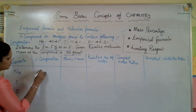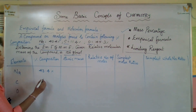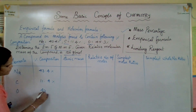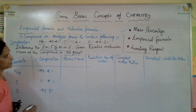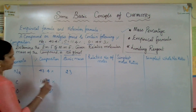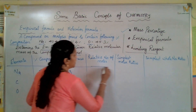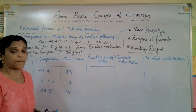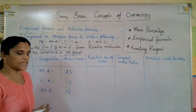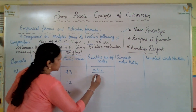Now find the simplest molar ratio by dividing each by the smallest value (0.95). Sodium: 1.89/0.95 ≈ 2; carbon: 0.95/0.95 = 1; oxygen: 2.83/0.95 ≈ 3. These are already whole numbers, so the simplest whole number ratio is 2:1:3.